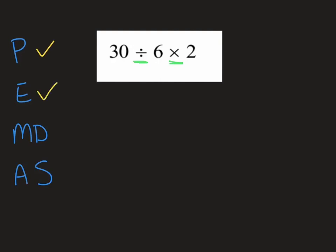So we're on multiply and divide next, but I see one of each. So remember how we figure it out — we always go from left to right. In this particular problem, make sure you go left to right since they are both on the multiply and divide step.